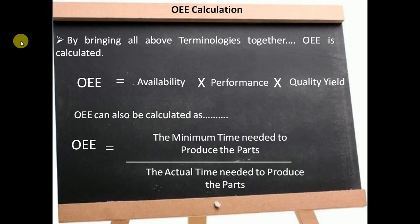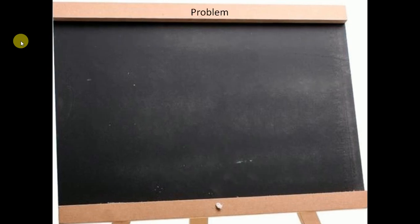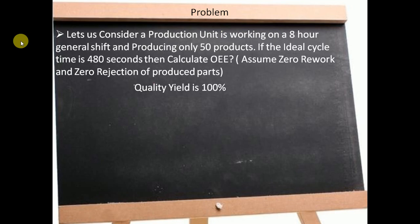Let us solve a problem in order to understand briefly how we calculate OEE practically. For better understanding, let us consider a problem. Consider a manufacturing unit that is running on a general shift of 8 hours per day, producing 50 products with one time pass, that is with zero rework and zero rejection. If ideal cycle time is 480 seconds, let us calculate OEE.